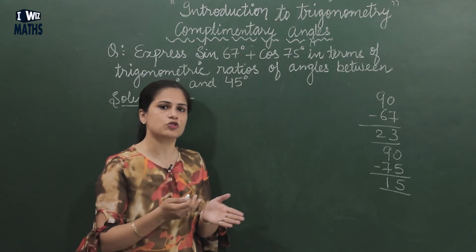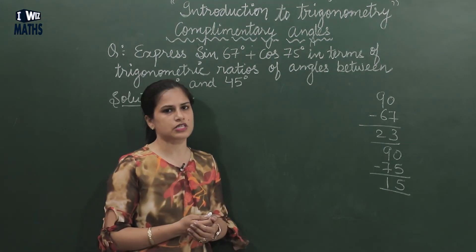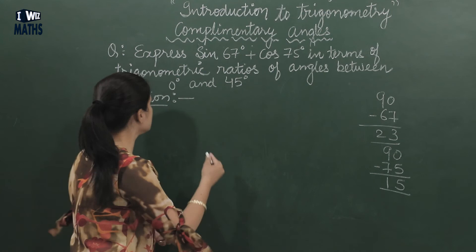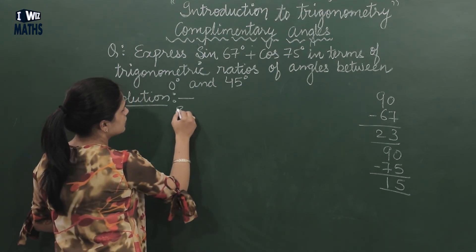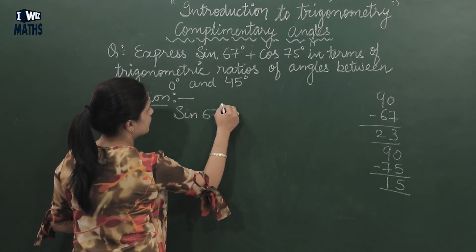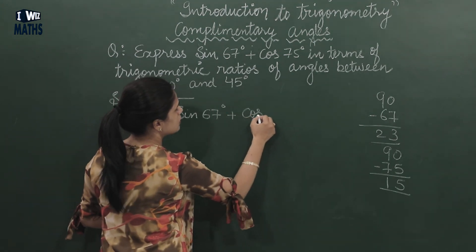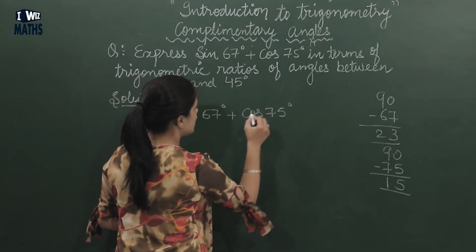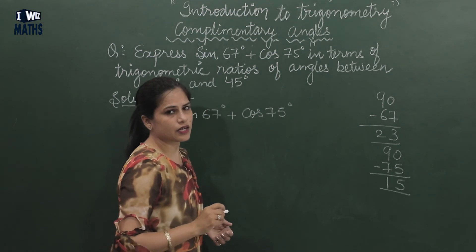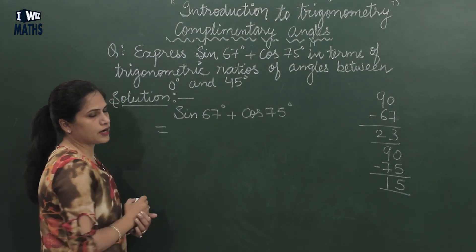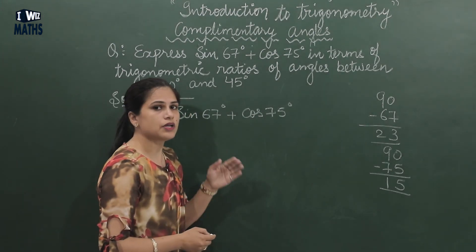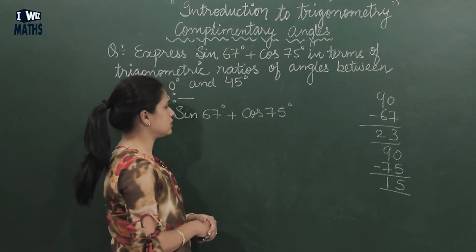And whenever we change complementary angles, their functions will also change. As simple as that. So I start here: sin 67° + cos 75°. Now we don't have an equal sign here, so for the next step we'll put equal. If it's an equal step, for the next step we put the implies sign.